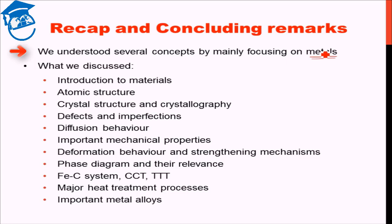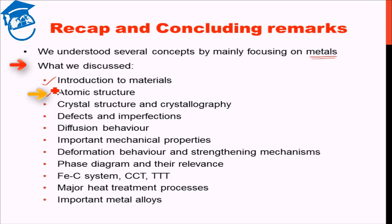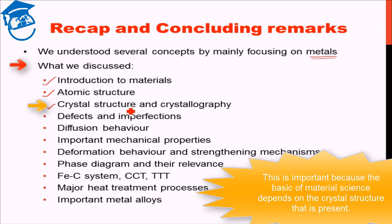We started with an introduction to materials, where I discussed briefly about the different systems — metals, polymers, ceramics, electronic materials, and more. Then we saw the chemistry behind materials, that is the atomic structure. We studied about crystal structure and crystallography, which was important because all metal systems and the basics of material science depend on the crystal structure that is present.